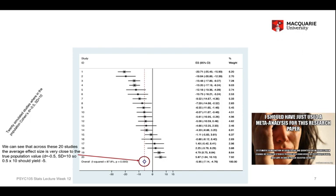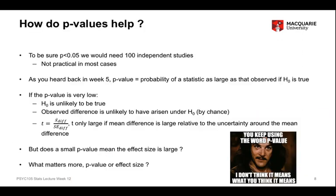This works well if you can conduct a lot of studies — you can be confident that sampling errors will balance out. A practical problem, though, is that to be sure the probability of falsely rejecting H0 is less than 0.05, we would need to conduct 100 independent studies. For many purposes that's just not practical, for financial, time, and resource reasons. Hence we rely upon this approximation from maybe just one study via the p-value, which is obtained from a hypothesis test.